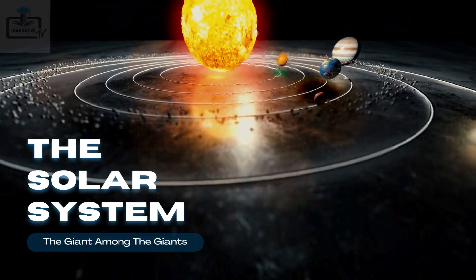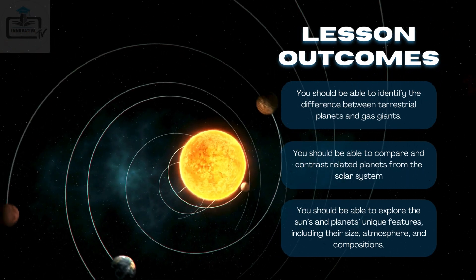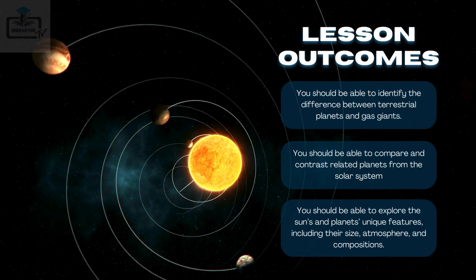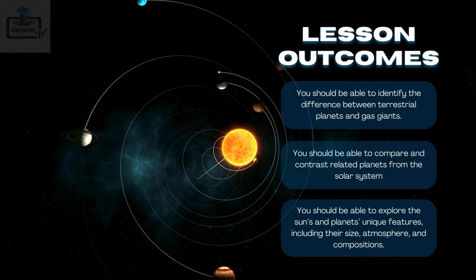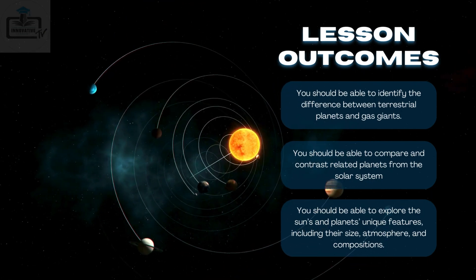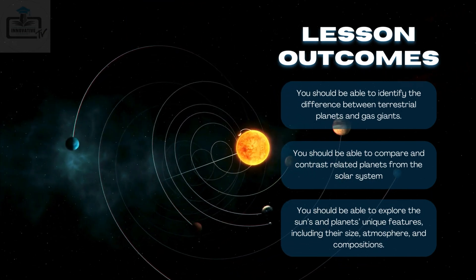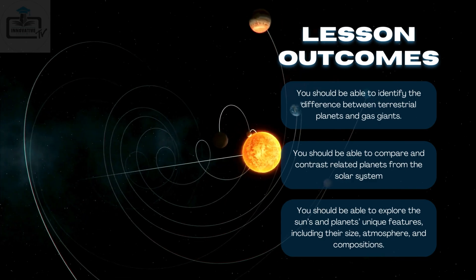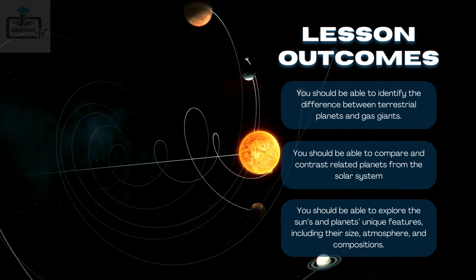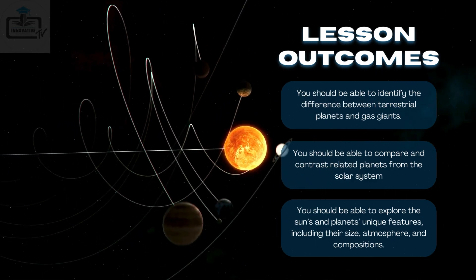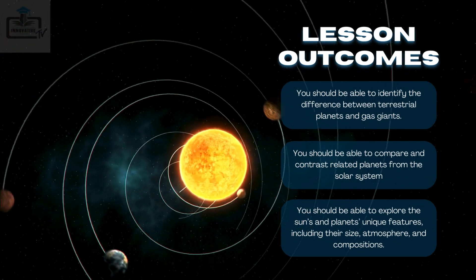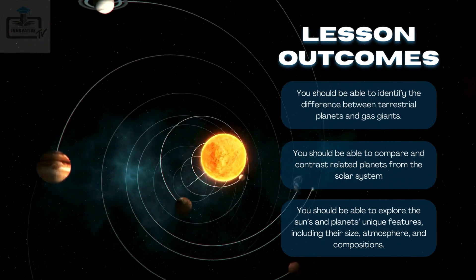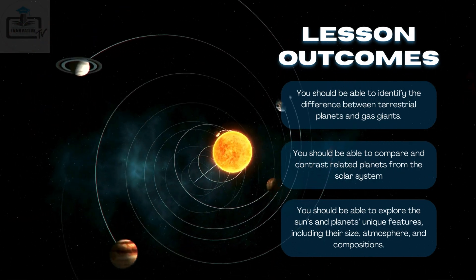The solar system, the giant among the giants. Lesson Outcomes: You should be able to identify the difference between terrestrial planets and gas giants. You should be able to compare and contrast related planets from the solar system. You should be able to explore the sun's and planet's unique features, including their size, atmosphere, and compositions.